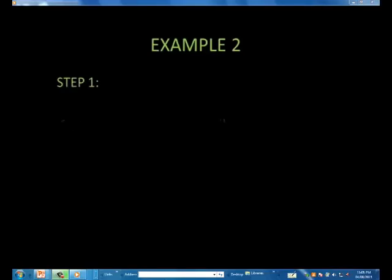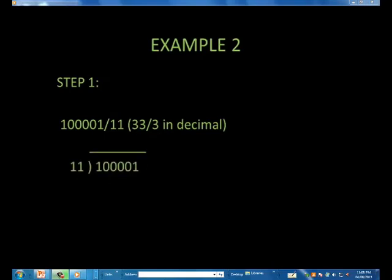Here we are dividing 100001 by 11, or 33 divided by 3 in decimal. Step one is to write it in the long division form. Since 11 has two digits, we look at the first two bits of 100001 and ask: can 11 go into 10? No, so we move one digit to the right.